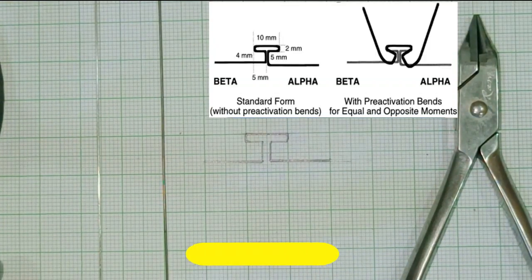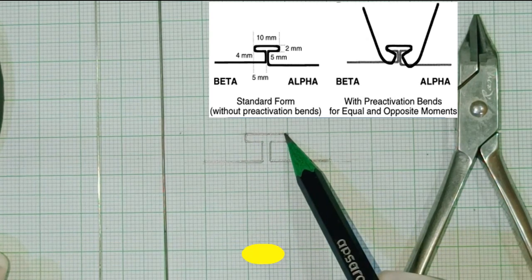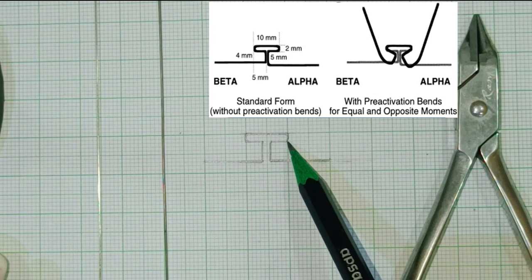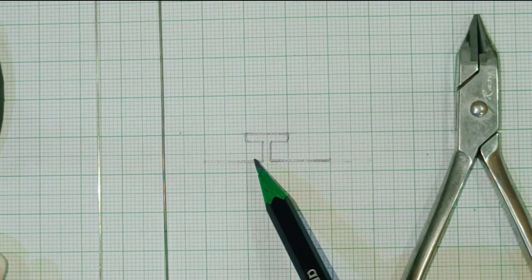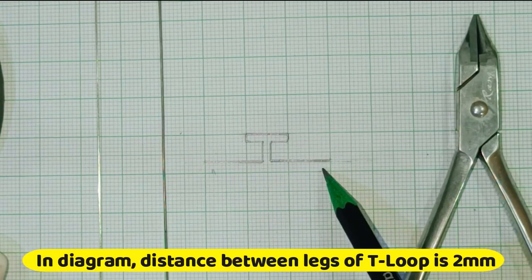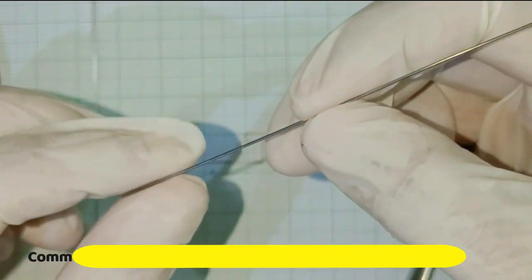Hello friends, today we will study about the T-loop given by Burstone. This is a T-loop which is 10 millimeter wide and the vertical height is 5 millimeter. The width of the loop is 2 millimeter, so the vertical total is 7 millimeter and width is 10 millimeter. The anterior arm is called alpha and the posterior is beta. We will study about these bends later.